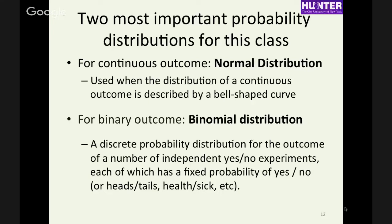These are the two probability distributions that are going to serve you well for most of this class. We will cover a couple of other distributions that are important, but for now it's the normal distribution bell curve and the binomial distribution for binary outcomes.